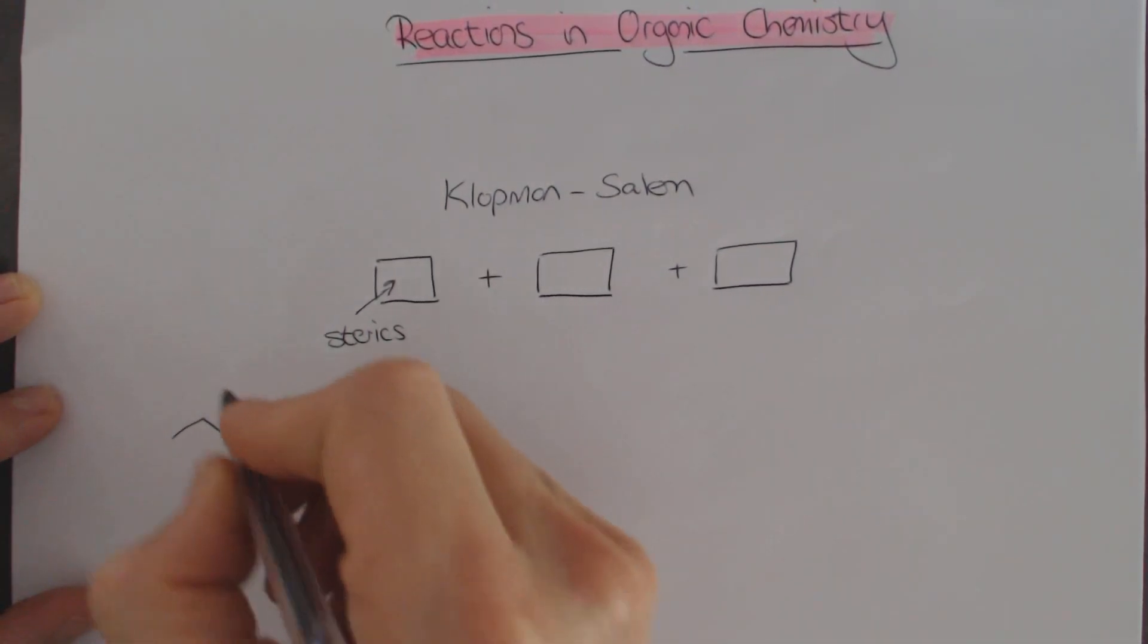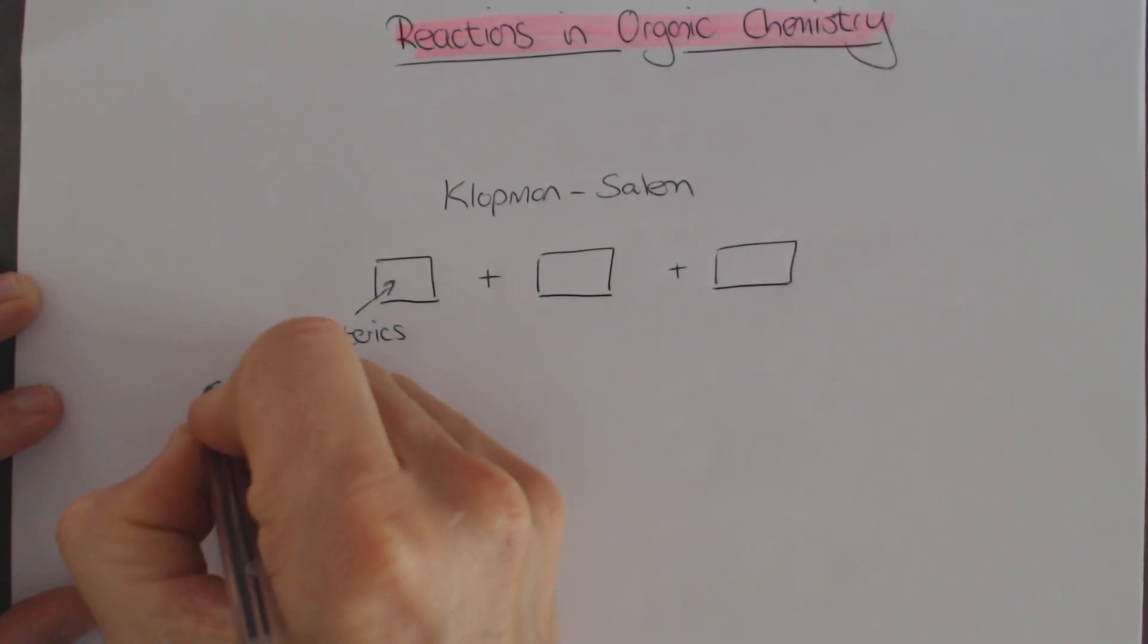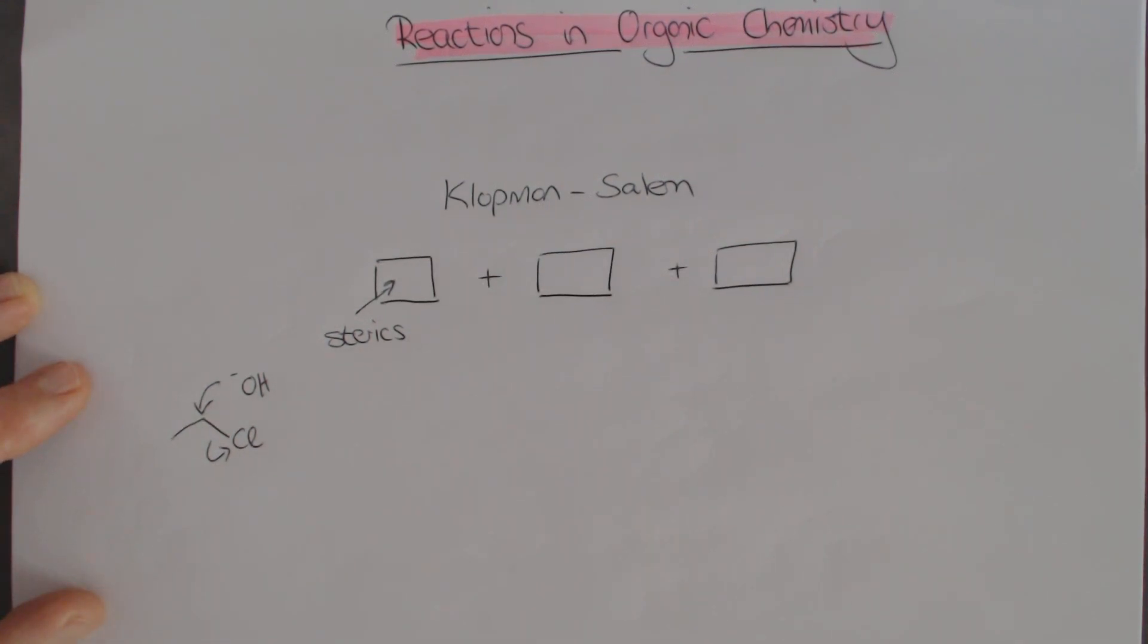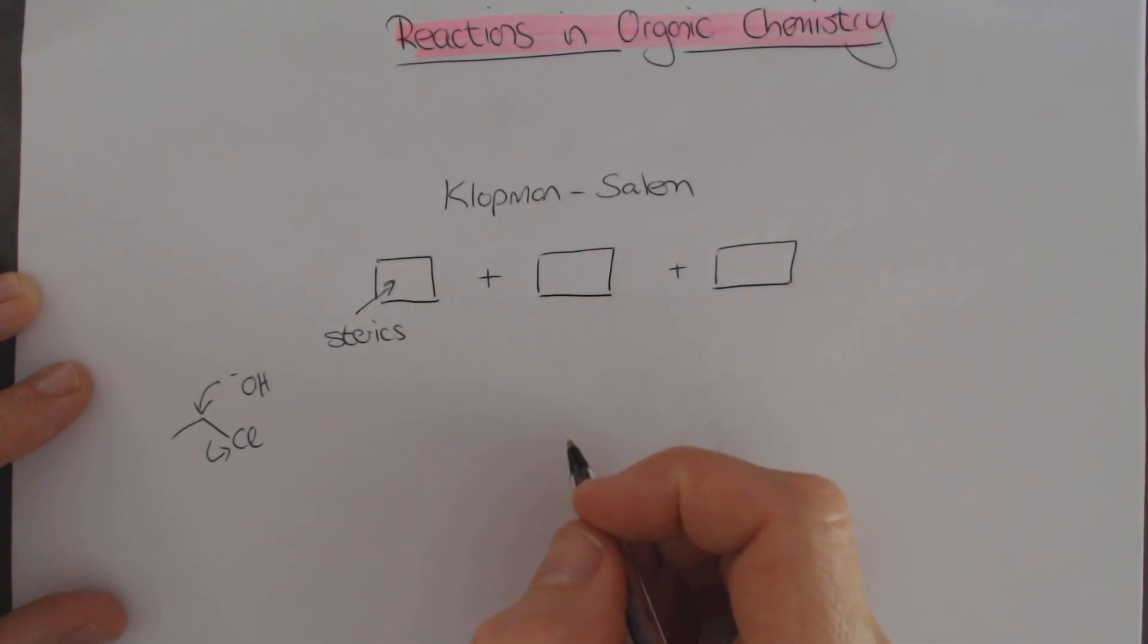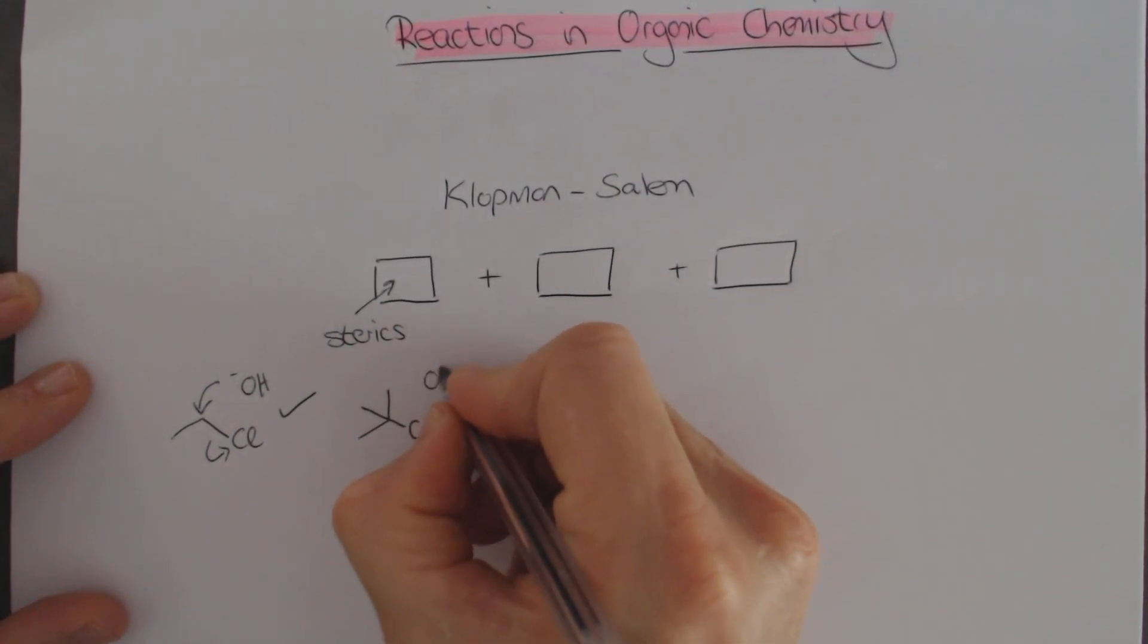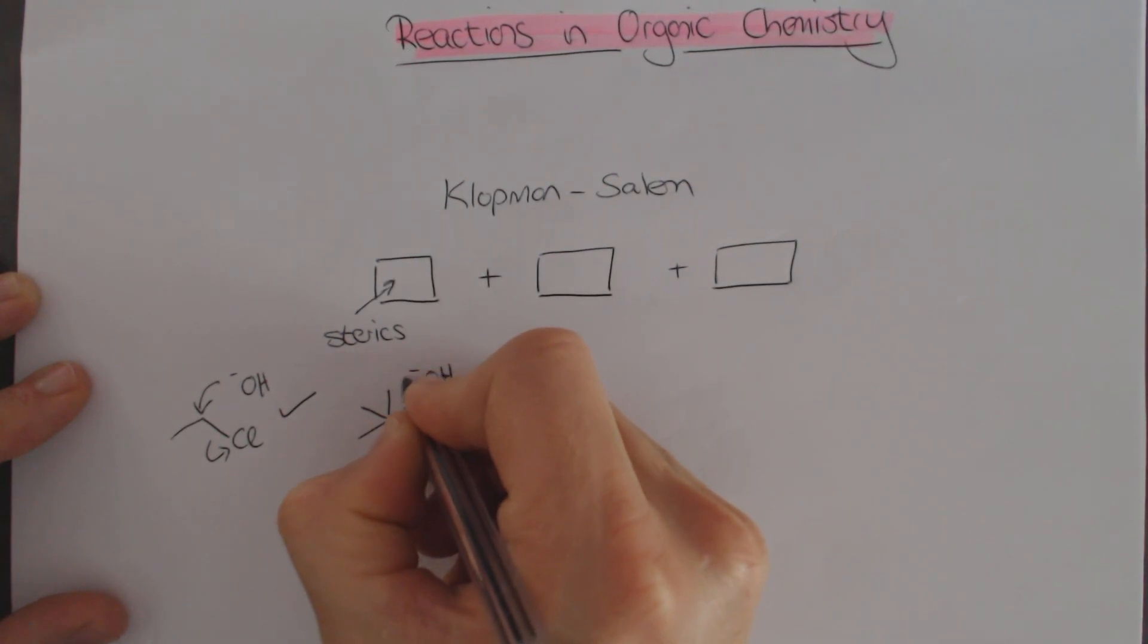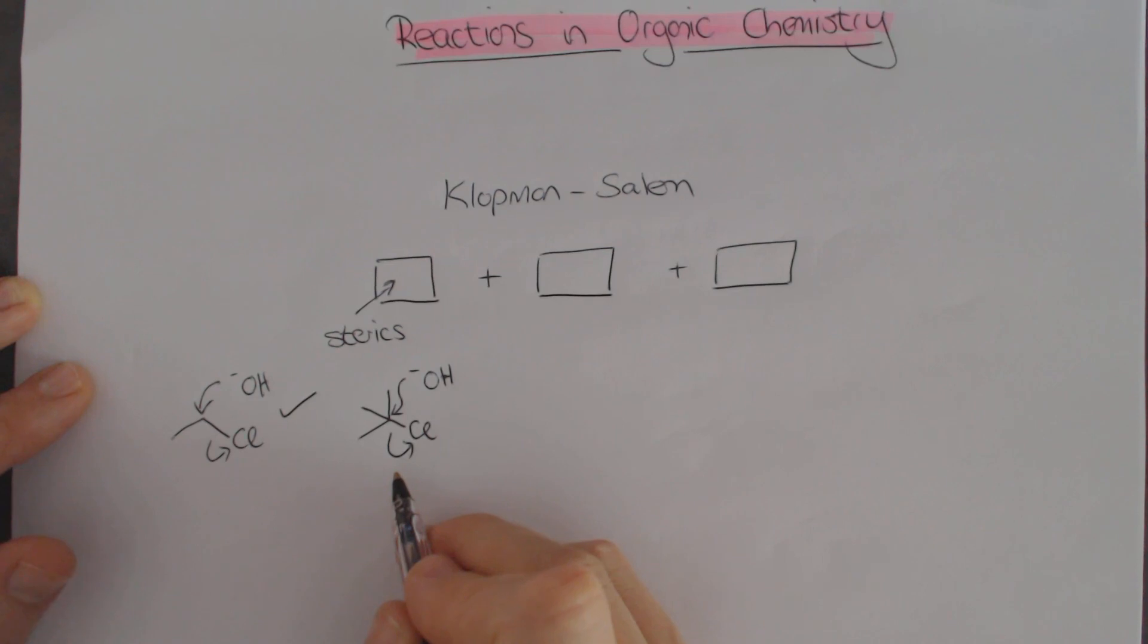For instance, we can take ethyl chloride and react it with a nucleophile such as hydroxide, and it adds to this carbon, breaks this carbon-chlorine bond, and we get a substitution reaction. That works very nicely.